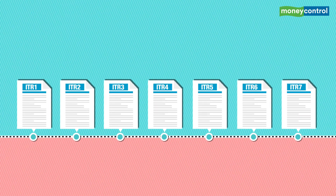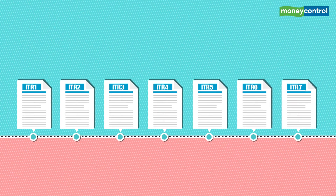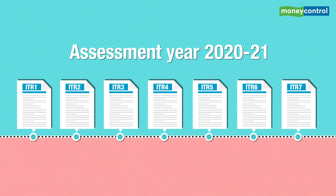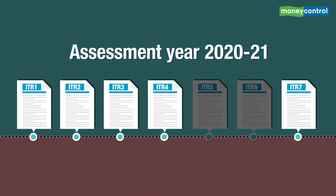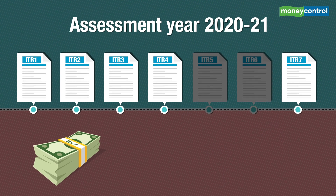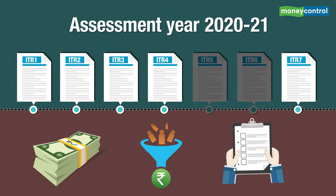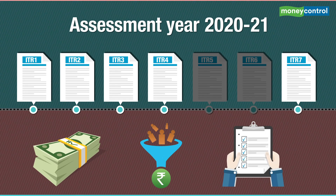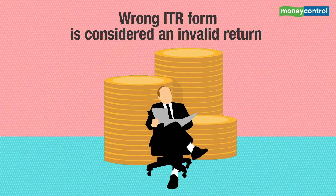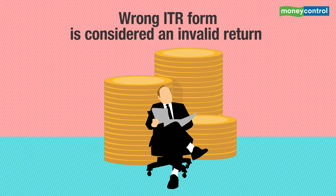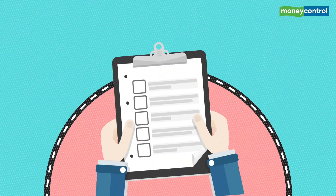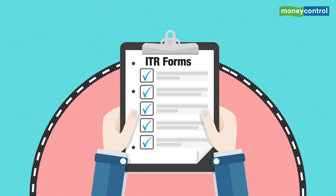There are 7 different income tax return forms for the assessment year 2020-21. Out of these, 5 can be used by individual taxpayers depending on their income level, sources of income, and other rules. It is important to choose the correct form as filing with the wrong ITR form is considered an invalid return by the Income Tax Department. Here's how to select the correct ITR form.